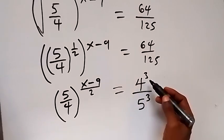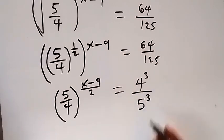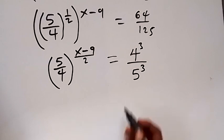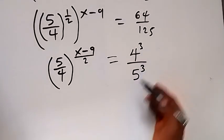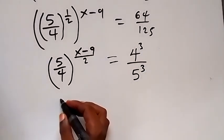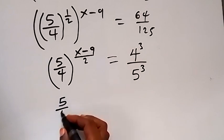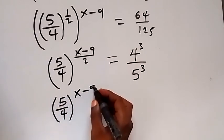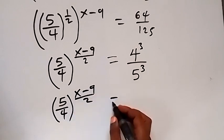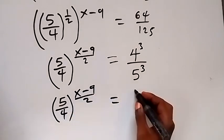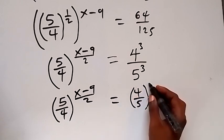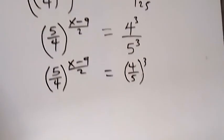That's 4 times 4 times 4 here, and 5 times 5 times 5. Also from here we apply the law of indices, and we can write this as 5 over 4 raised to power x minus 9 over 2, which is equal to 4 over 5 raised to power 3.